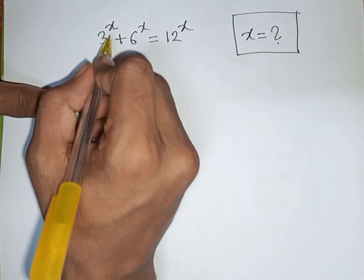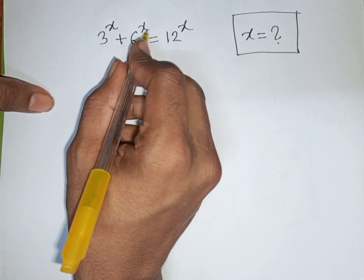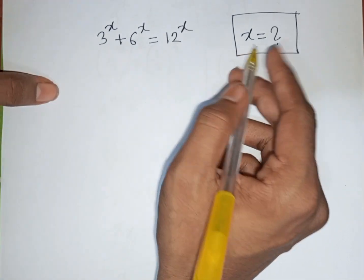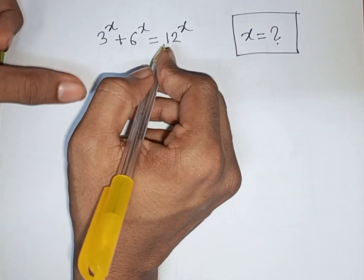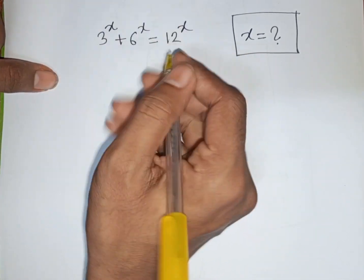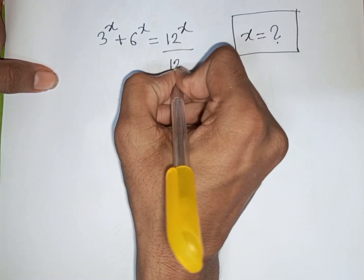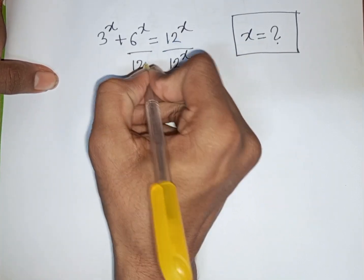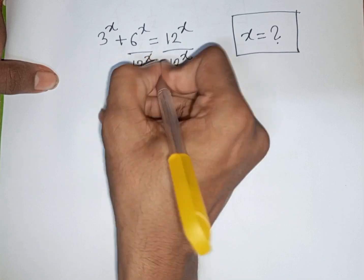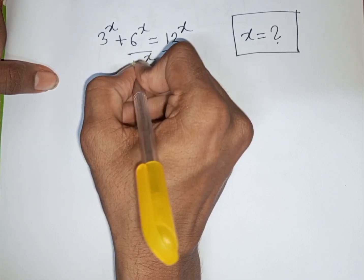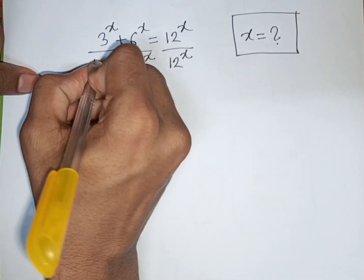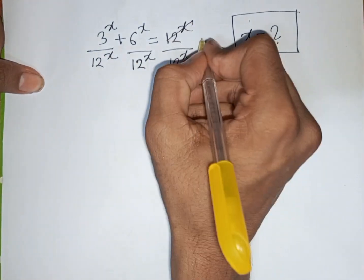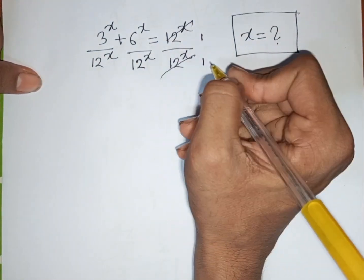How to solve 3^x + 6^x = 12^x. Find the value of x. First, we divide both sides by 12^x, so divided by 12^x on both sides. This will cancel on the right side.